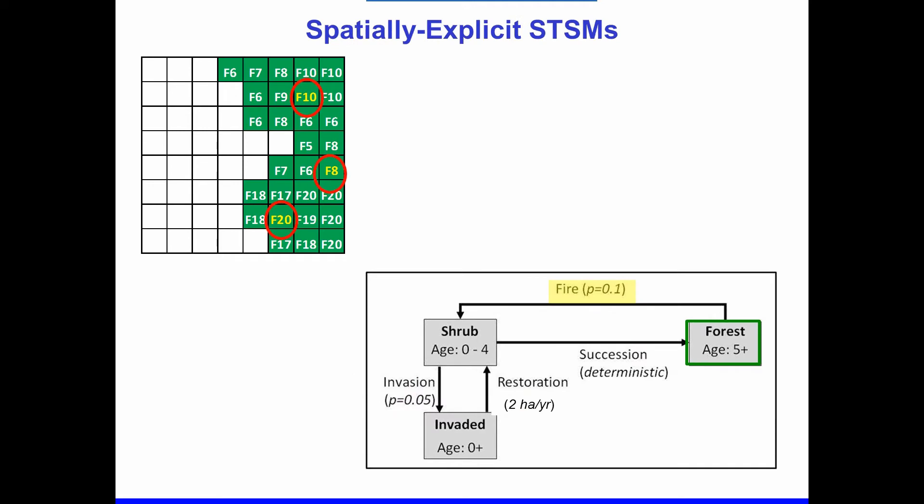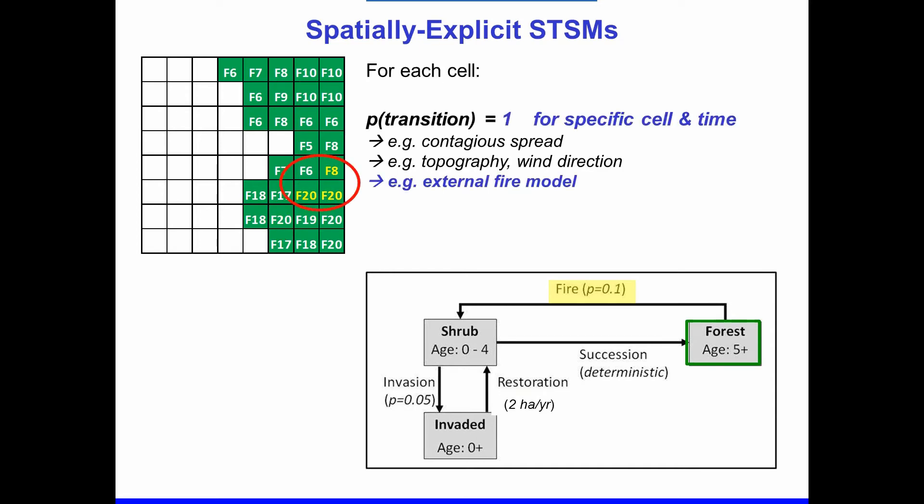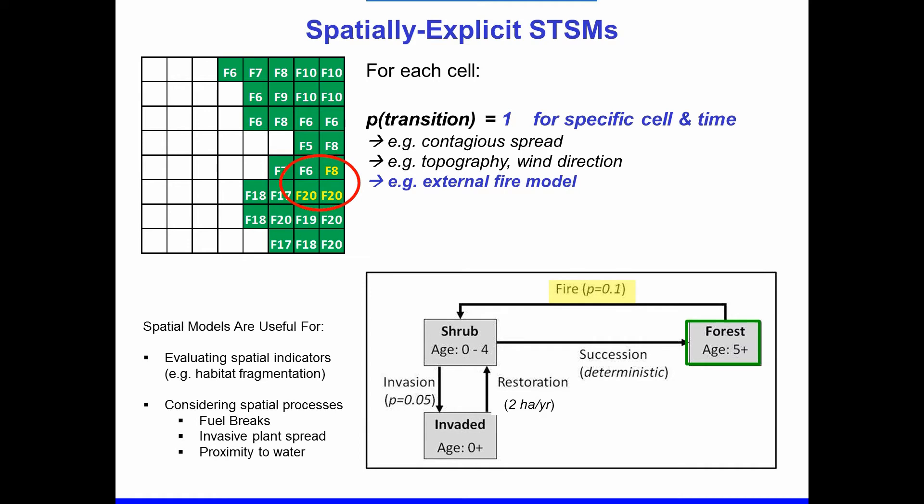The models can also be spatially explicit. Even though I showed you a map in this example, the cells did not interact with each other. Using a spatially explicit model, the cells can interact — for example, for a fire event, rather than having three cells independently burning, you can have a fire event initiating and then spreading from one cell to its neighbors. Spatially explicit models are useful because they allow us to evaluate spatial indicators, such as how fragmented the habitat of a particular species of interest might be. They also allow us to consider scenarios where spatial processes are important, such as implementing fuel breaks, looking at how invasive plants might spread across a landscape, or how grazing probabilities might be affected by proximity to water.